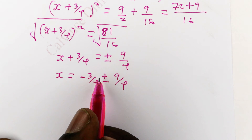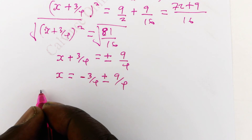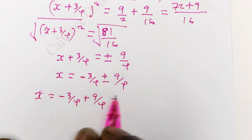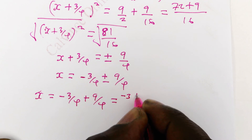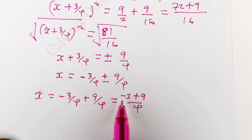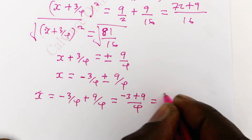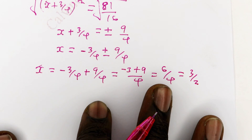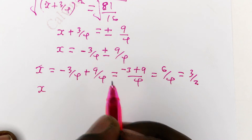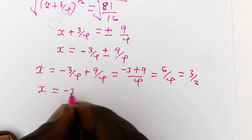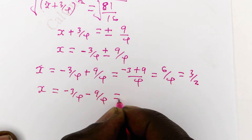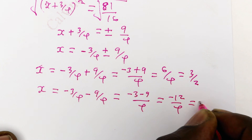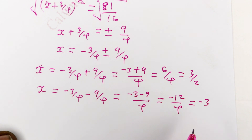We consider the first instance where there is a plus and the second instance where there is a minus. So x equals minus 3 over 4 plus 9 over 4, which is 9 minus 3 over 4, giving 6 over 4, which simplifies to 3 over 2 as our first solution. The other solution is minus 3 over 4 minus 9 over 4, which is minus 12 over 4, giving negative 3. So x is either 3 over 2 or x is negative 3.